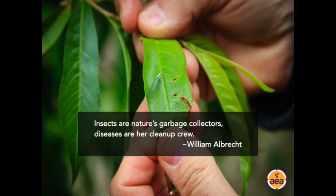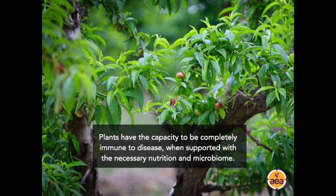The context for thinking about diseases in this manner is really thinking about insects and diseases as nature's survival of the fittest mechanisms. They are here to take the unhealthy plants out of the system. I believe it is possible to grow plants that can be completely resistant to disease, as long as they're supported with the right nutrition and the right microbial microbiome. Both of those are important — you can't have strong disease resistance with just good mineral nutrition but without the proper microbiome, and vice versa. It really requires both.